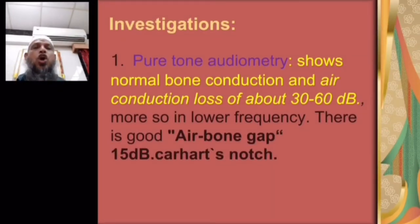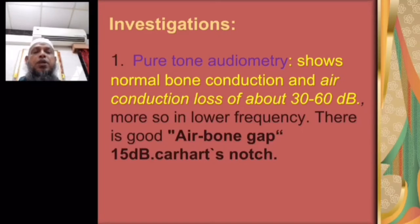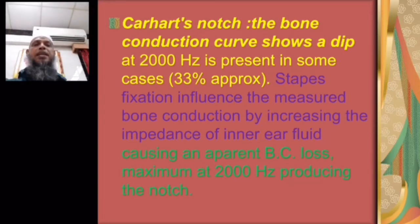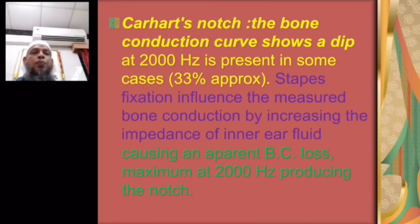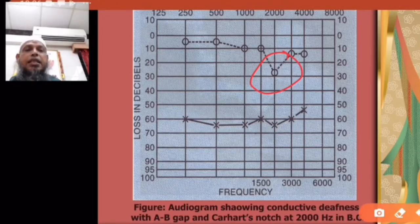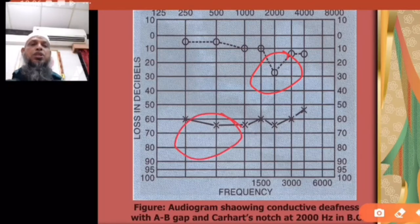Investigation — pure tone audiometry shows normal bone conduction and air conduction loss of about 30–60 dB, more in the lower frequencies, with a good air-bone gap of at least 15 dB. Carhart's notch is present in approximately 33% of cases: the bone conduction curve shows a dip at 2000 Hz, as stapes fixation increases the impedance of the inner ear fluid causing apparent bone conduction loss maximum at 2000 Hz.